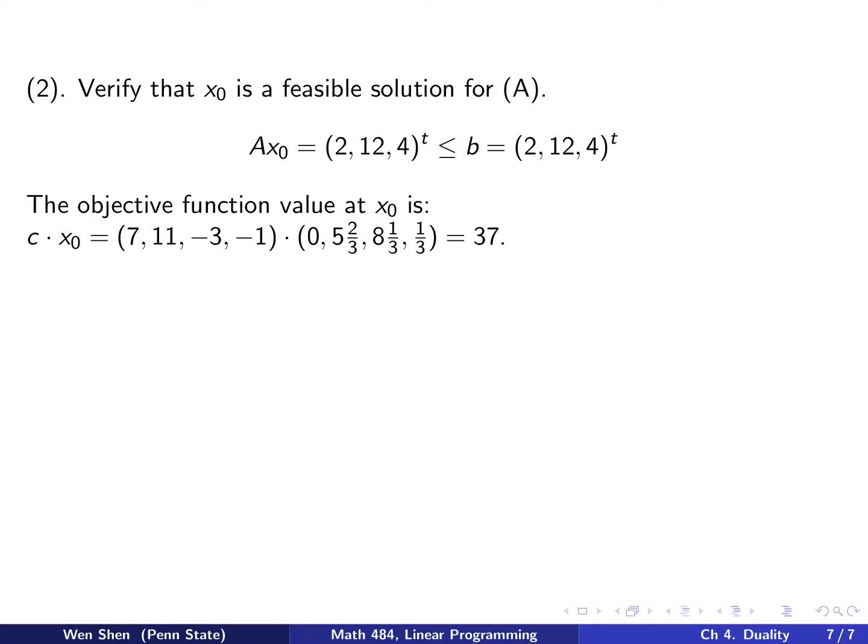Step two: I need to verify that the given x₀ is a feasible solution for problem A. I compute A times x₀. A is that matrix, x₀ is that vector. You calculate this product out and you get this vector: (2, 12, 4). I need to verify that it is less than or equal to b. What is the b vector? (2, 12, 4). It's the same, so less than or equal holds.